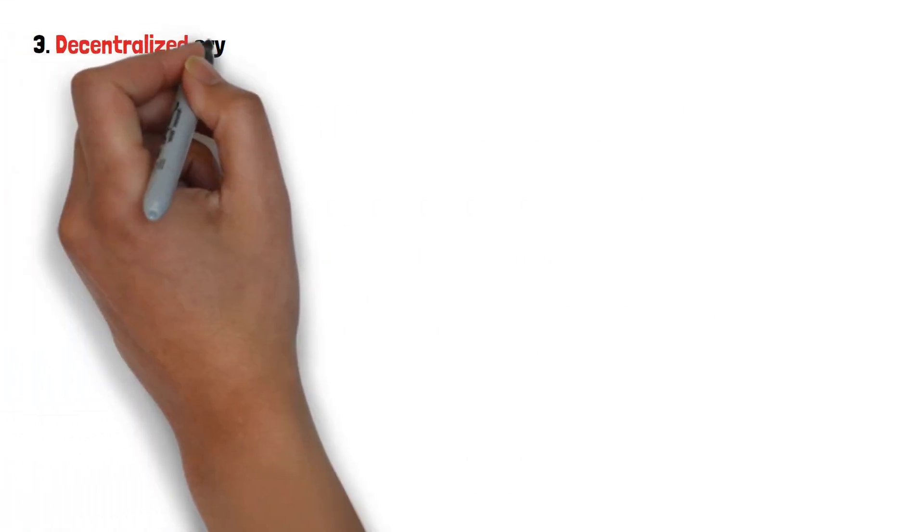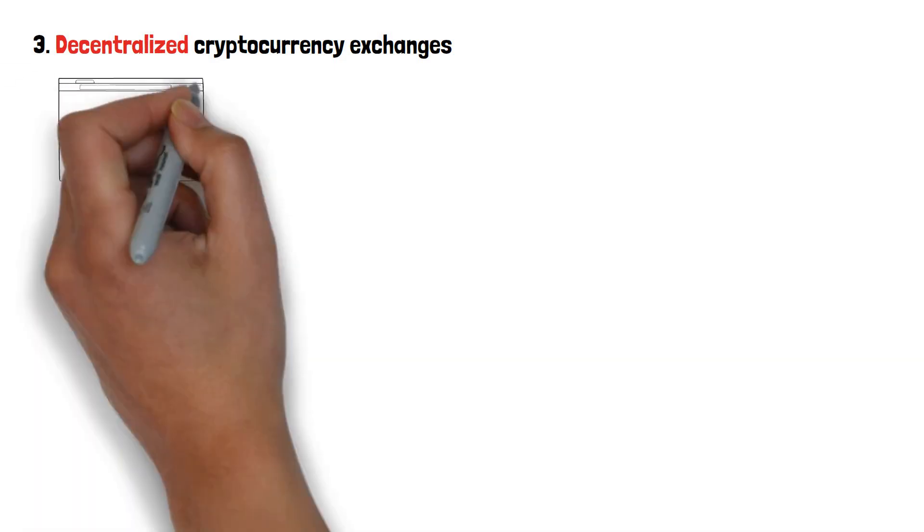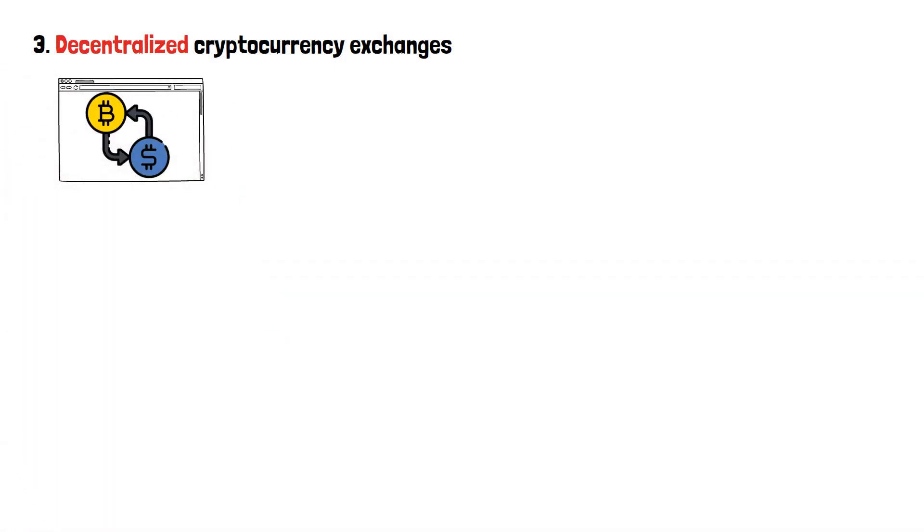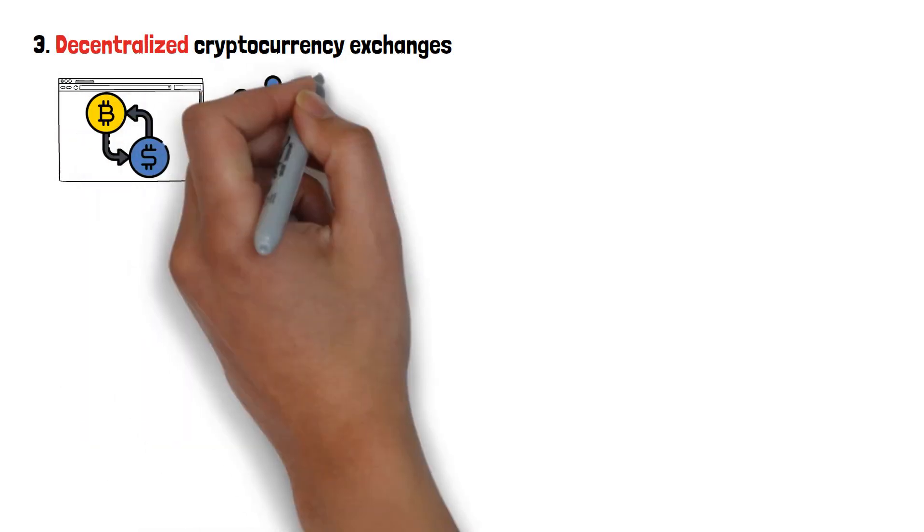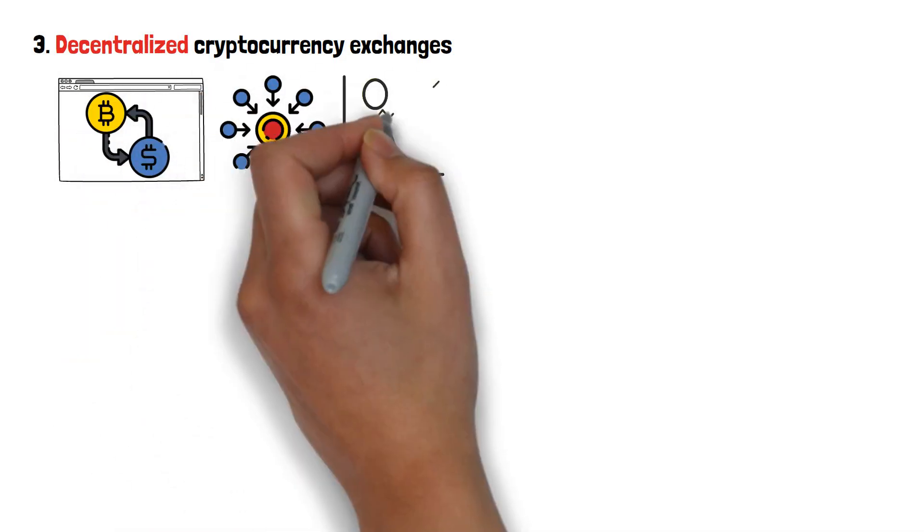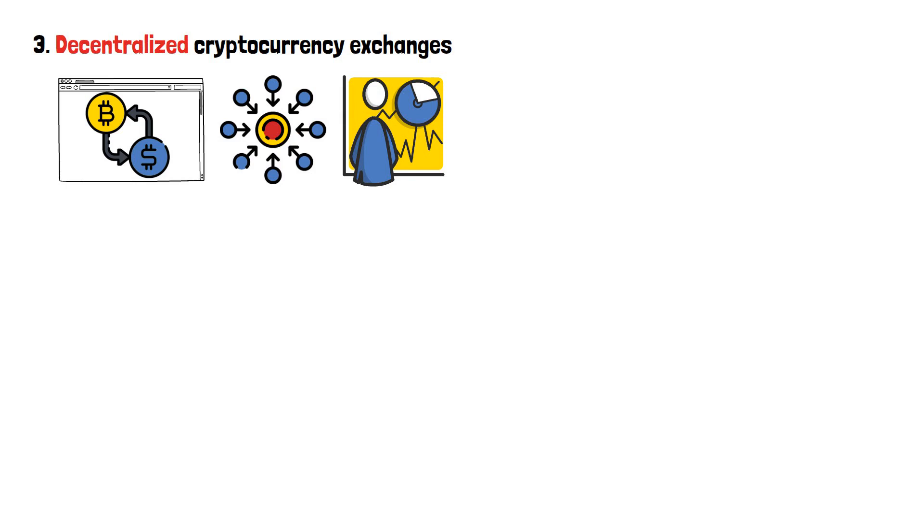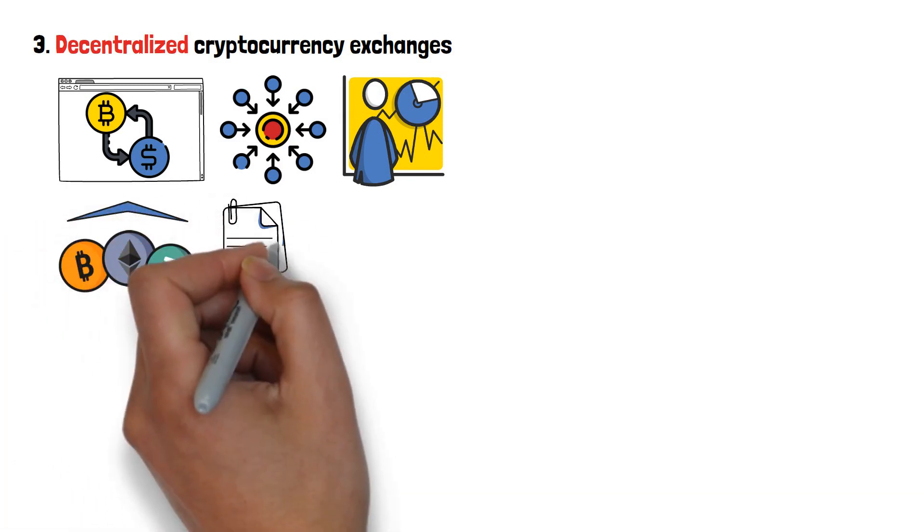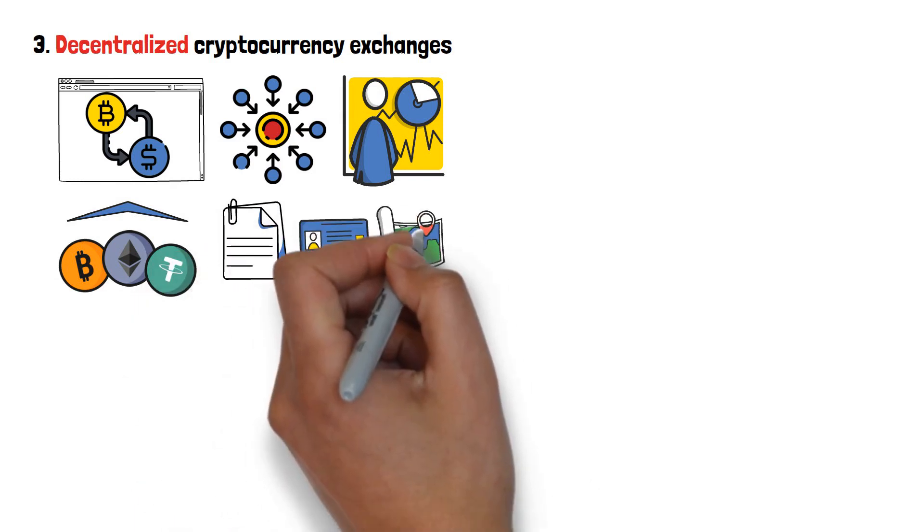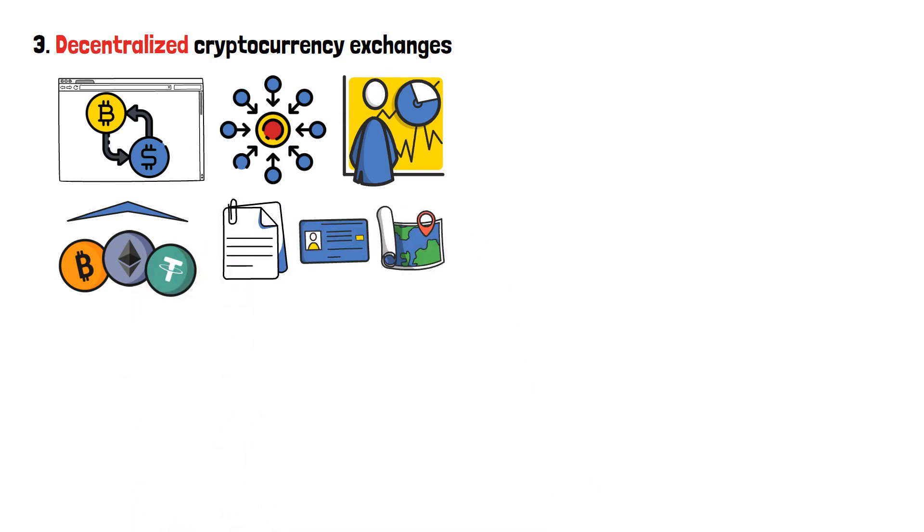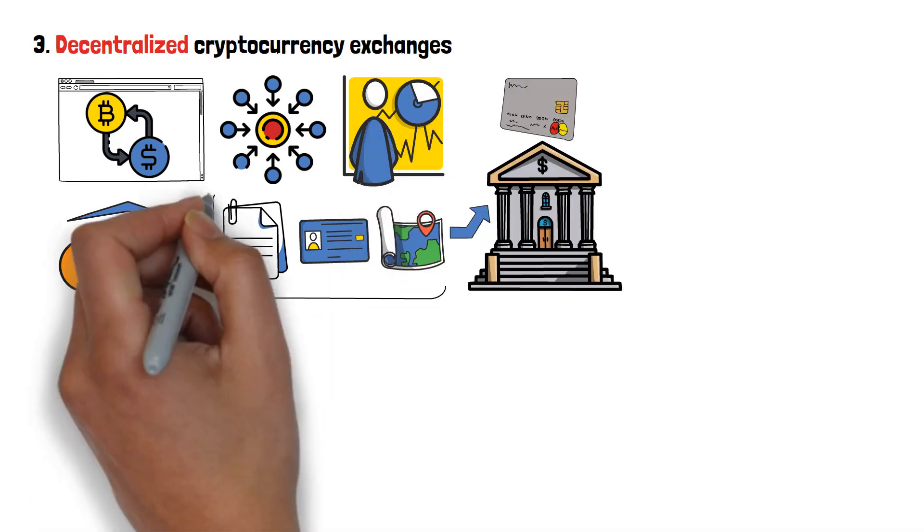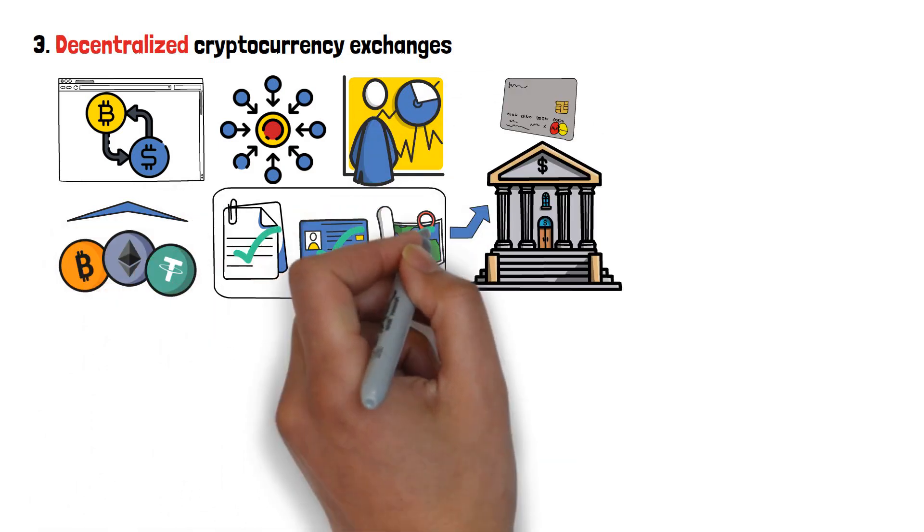Next up, decentralized cryptocurrency exchanges. A crypto exchange platform is a place where people go to exchange different crypto assets. By default, these platforms are centralized, and follow the know-your-customer financial guidelines. In other words, if you want to trade cryptocurrencies on them, you will need to provide your personal information, ID, residential address, and so on.